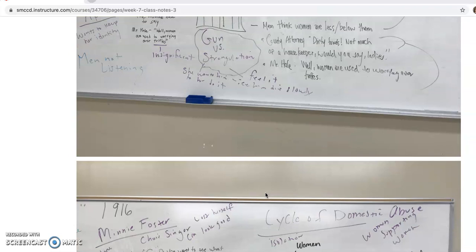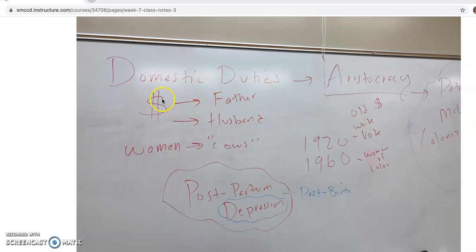Also, I just wanted to bring a few things in here. You know, women had their domestic duties, especially when it came to the aristocracy or the people of higher wealth. The husband and the father were the ones that made the money. And women were really kind of like slaves in a sense. They were slaves to their husbands and their fathers. They had to kind of do whatever they were told. And so anyway, it wasn't until the 1920s that white women were allowed to vote, and then the 1960s women of color were allowed to vote. So these are some dates to keep in mind when we're talking about feminism.